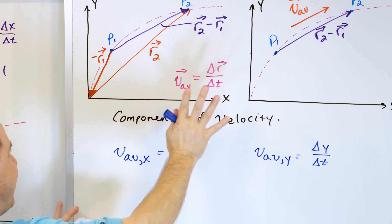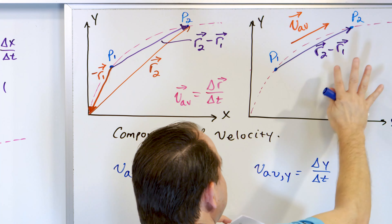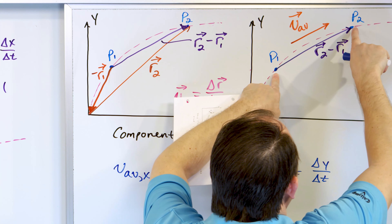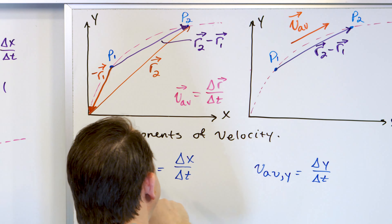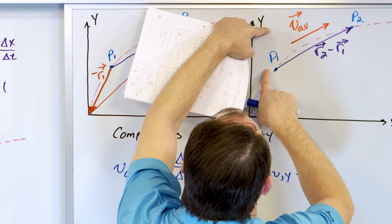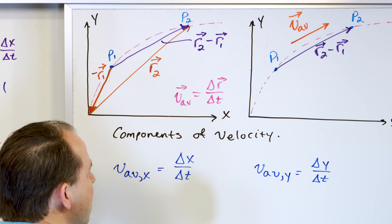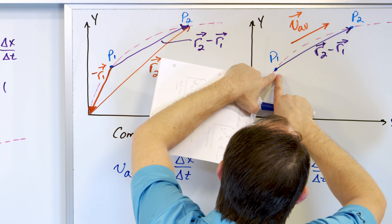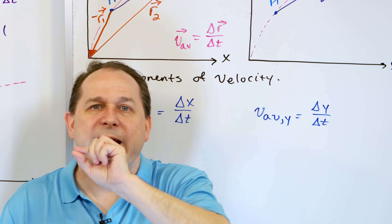All motion in two dimensions is a mixture of an x motion and a y motion. If the particle goes in a third dimension toward the camera, it would have x, y, and z components. We not only can, but we have to consider all those motions separately in order to solve any problems. So we considered the entire vector as delta r vector divided by delta t — all of the motion together as one composite — but you can break this down and say the average velocity in the x direction is how far did it go only in the x direction, divided by time.